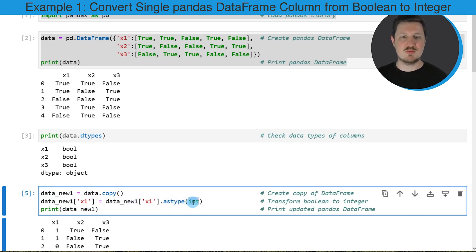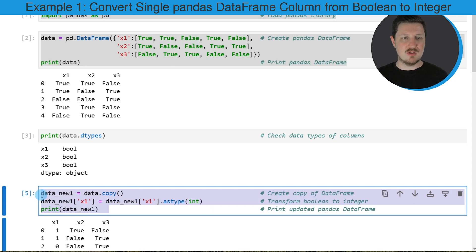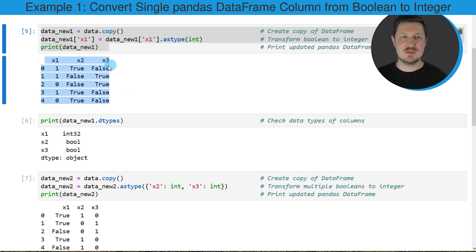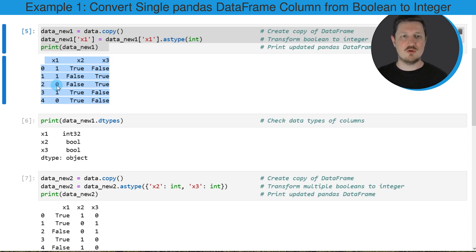Within the astype function, I'm specifying that this data type should be the integer data type. If you run the lines of code that you can see in the fifth code box, you can see below the code box that our new DataFrame still contains the same columns, but the first column was converted to the integer data type. The boolean value True has been converted to the value one, and the boolean value False has been converted to the value zero.